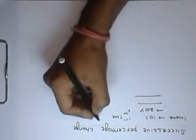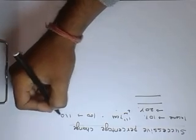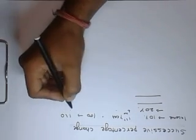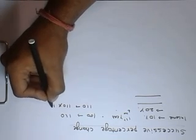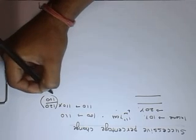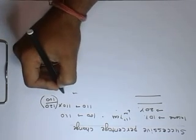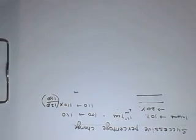Then what would be the net salary of A? To solve this problem using the conventional method, suppose the income is 100. So after one year, it would be 110. And in the second year, it is increased by 20%, which means 110 × (120/100). This is the multiplying factor we learnt in the previous video. So we will get 132.